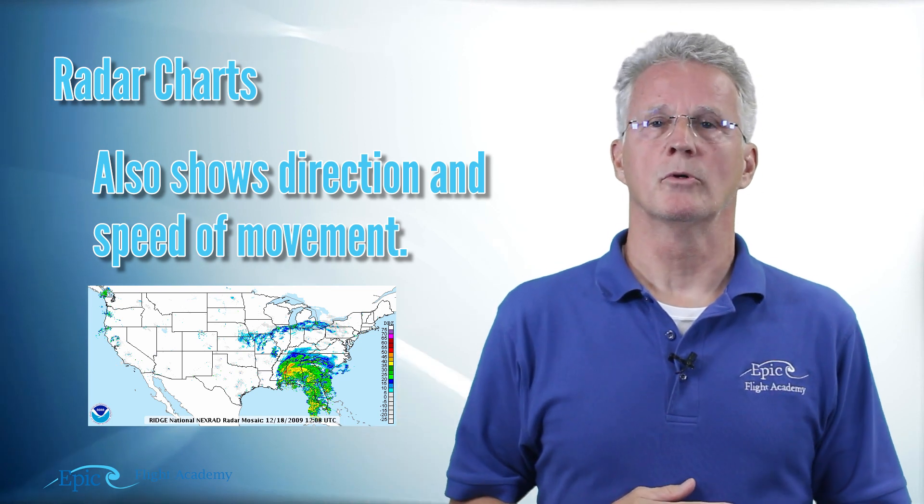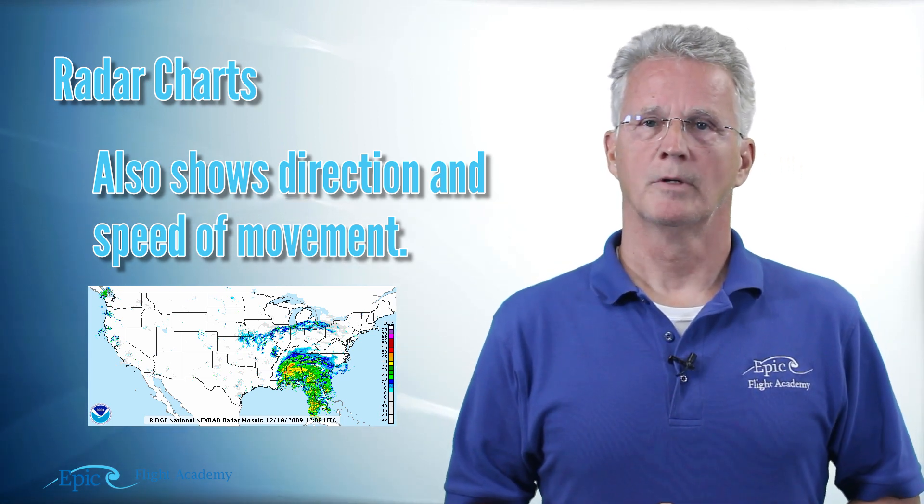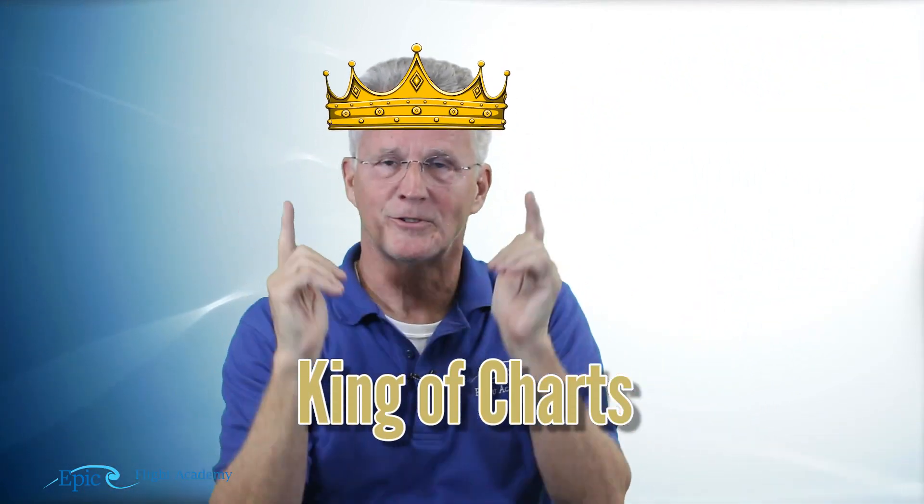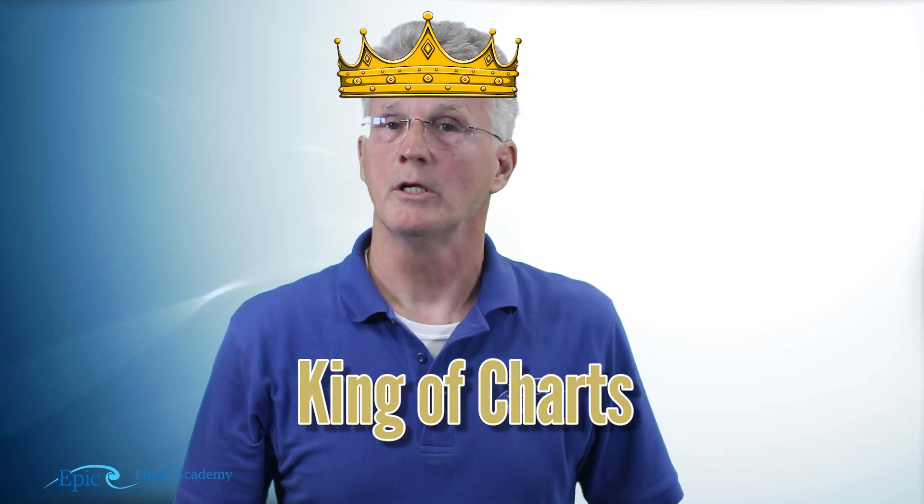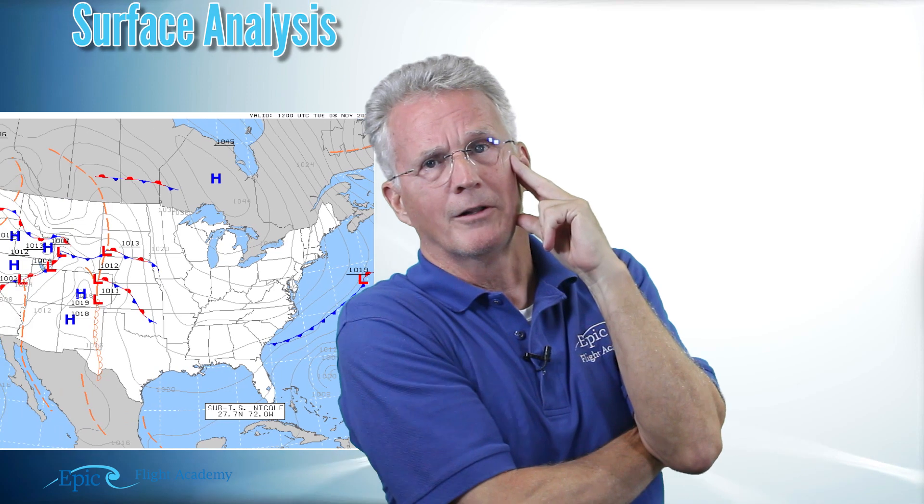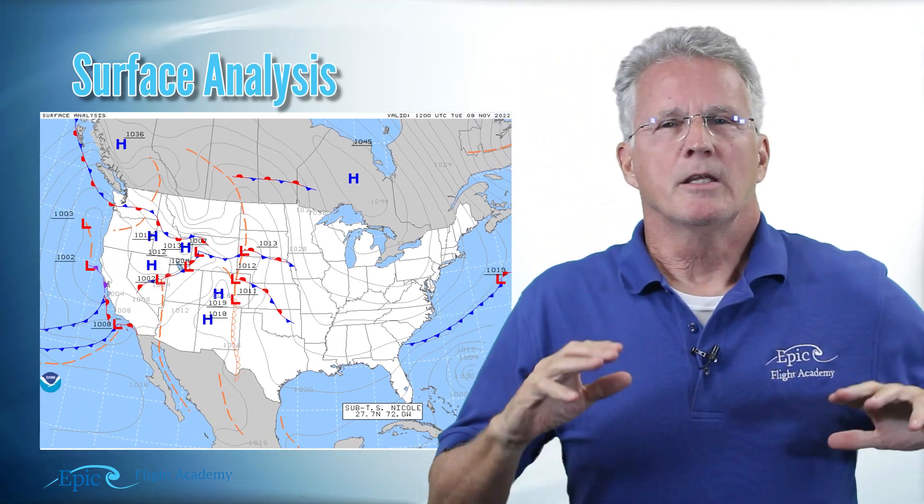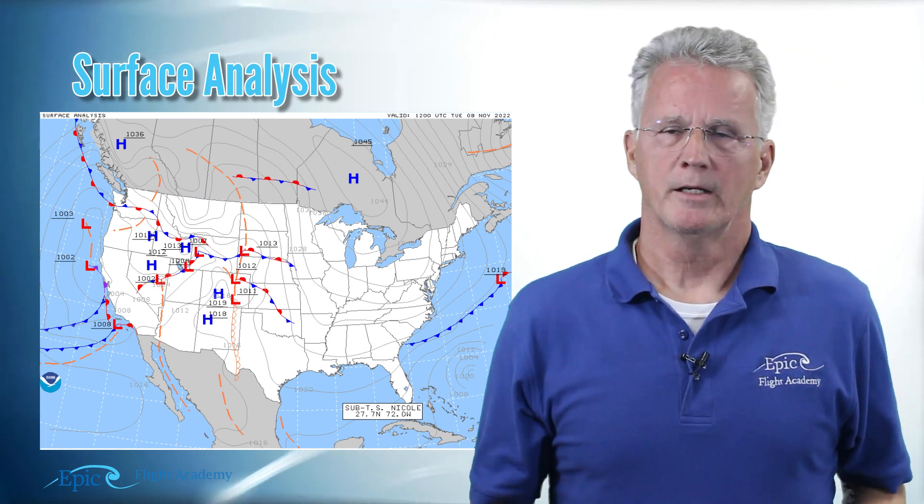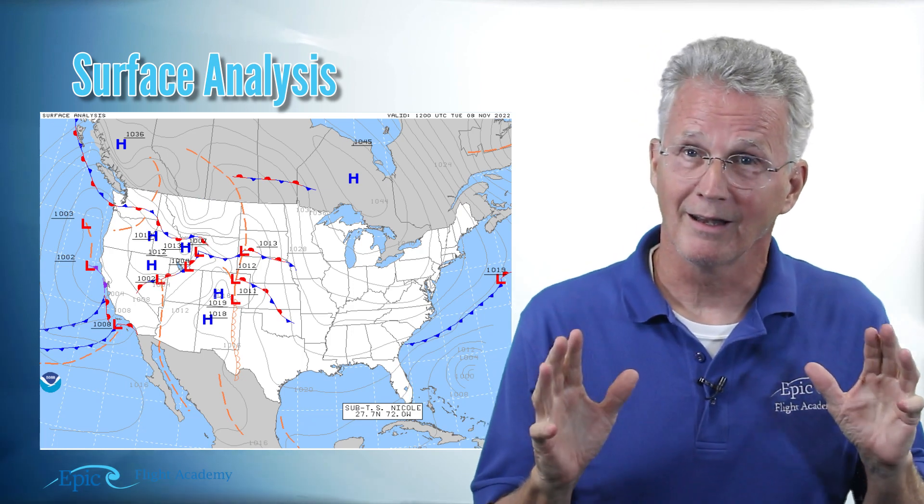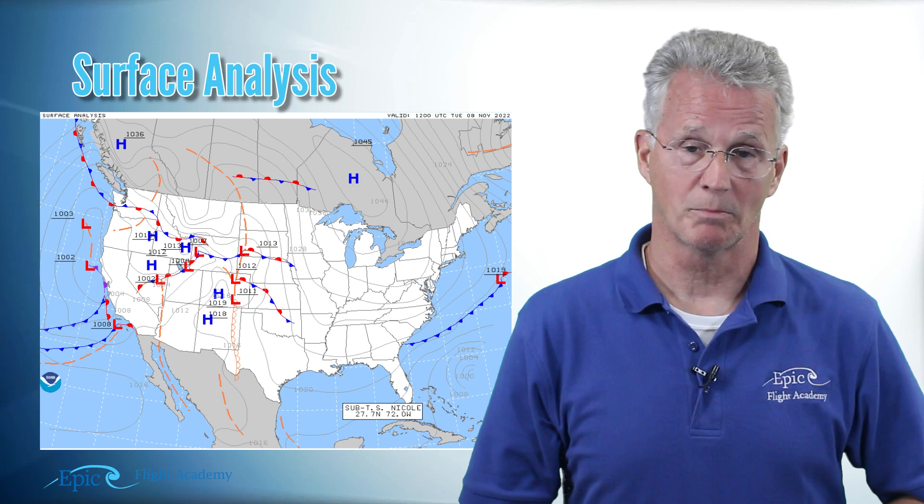And that brings us to our next observed product. And that's the one that I call the king of charts. And this is the surface analysis. Well, Mr. Mike, why do you call that the king of charts? The reason is because the information provided on the surface analysis chart gives us a lot of information if we understand basic meteorology.